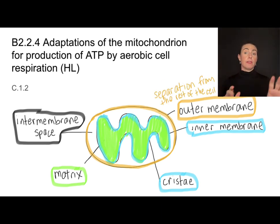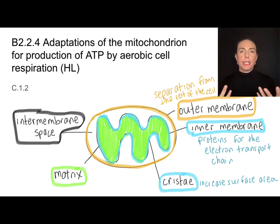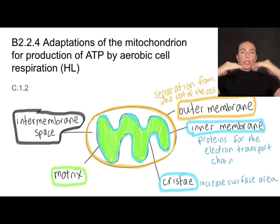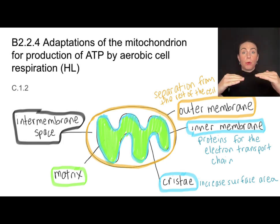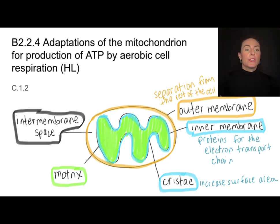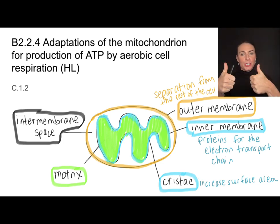The outer membrane is going to give us separation from the rest of the cell. Embedded in the inner membrane are all the proteins needed for the electron transport chain and for chemiosmosis — those are just the processes that help create ATP. These cristae, the folds in the inner membrane, make more surface area, which means more electron transport chains and ATP-producing proteins.